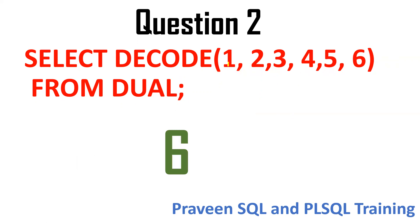Let me explain one more time. The first value is compared with key-value pairs: two, three — no match; four, five — no match. So it goes to the else part, which is six. This is confirmed practically — no one is matching, so we go to six. DECODE is a key-value structure: key, value, key, value, then else.